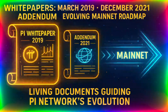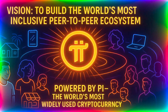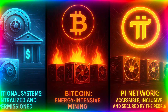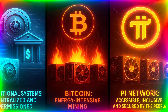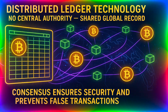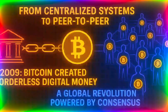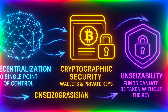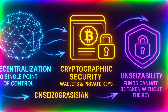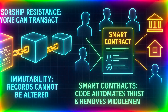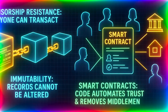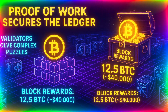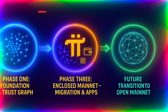Pi's white papers are key to understanding its design, beginning with the original March 2019 white paper and followed by the December 2021 addendum, which added new chapters on the token model, mining, and roadmap with details for the mainnet. The white papers may continue to be updated as Pi Network evolves during the enclosed mainnet period.